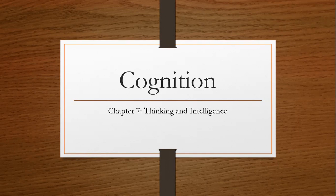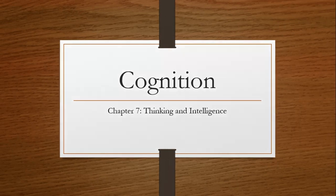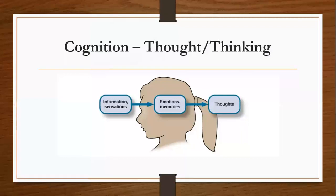Now before we begin, there is a video I'd like you guys to watch on YouTube. I have it right below, and once you finish please hit resume on this lecture. So hopefully you guys enjoyed the rubber hand illusion. It is a fun example of what is studied in cognitive psychology, which is the field of psychology dedicated to examining how people think.